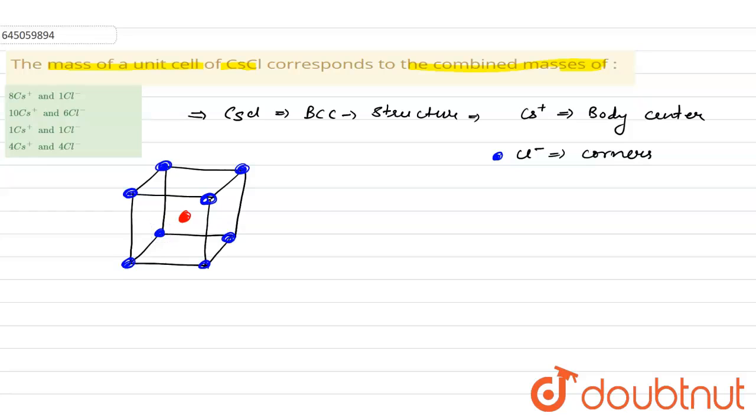So now let's calculate number of atoms. The Cl- atoms are present at corner, that is eight. Eight corners are there and one corner is shared by eight unit cells, so for one unit cell it will be one eighth.